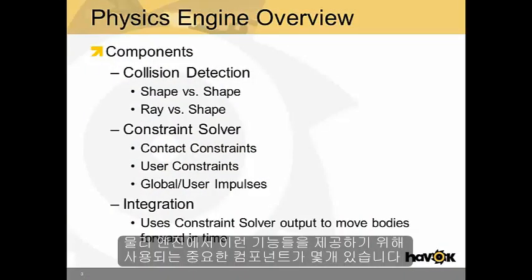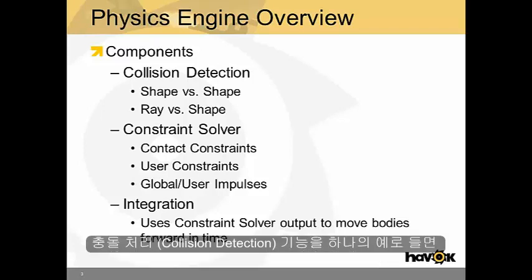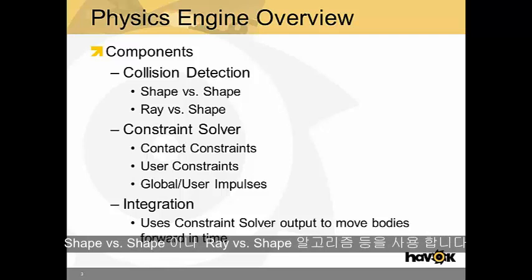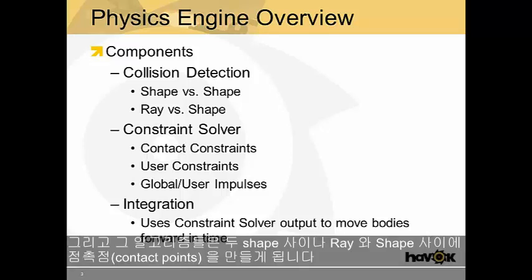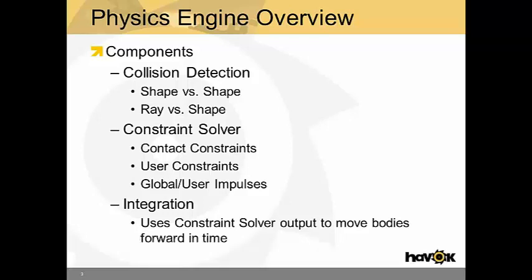There are several main components to a physics engine which allow it to provide these services. For instance, collision detection — this is your shape-versus-shape or ray-versus-shape algorithms. These provide contact points between shapes, or contact points between a ray and a shape.